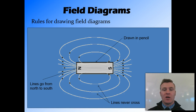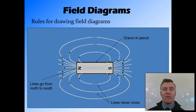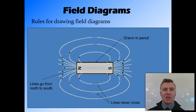Another thing when drawing field diagrams is that areas of a stronger magnetic field have the lines closer together. You can see in this diagram, on the left-hand side, we have the north pole of the magnet with lines coming out of it, arrows pointing away. The lines are close together showing that the magnetic field is much stronger at the north and south poles than at the sides or belly of the magnet.